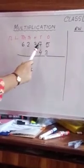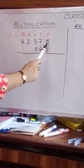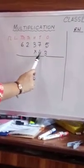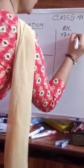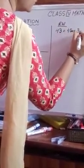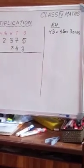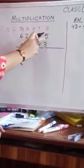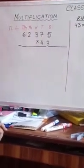Today we are going to learn multiplying 62375 by a two-digit number: 43. Now 43 means four tens and three ones. So first of all, what we are going to do is take the number 62375.